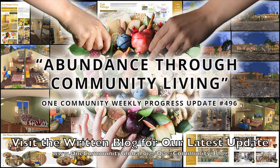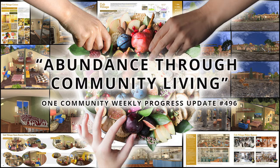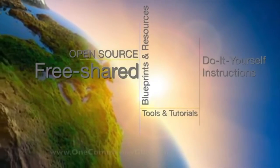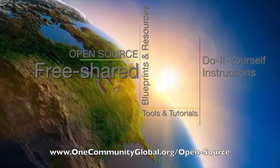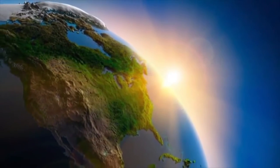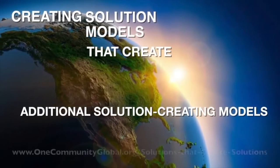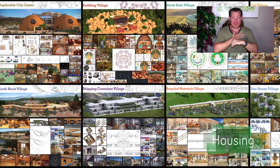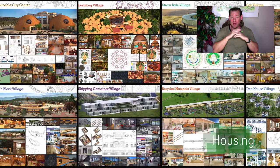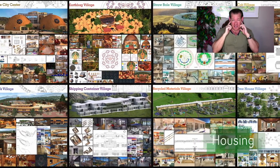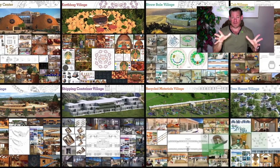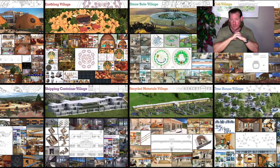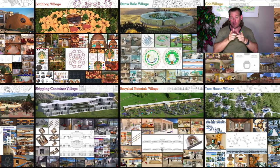Abundance through community living — One Community weekly progress update number 496. One Community is a 501c3 non-profit organization creating open source and free shared blueprints, resources, tools, tutorials, and do-it-yourself instructions for highest good living — creating solution models that create additional solution-creating models in the service of all life on this planet.